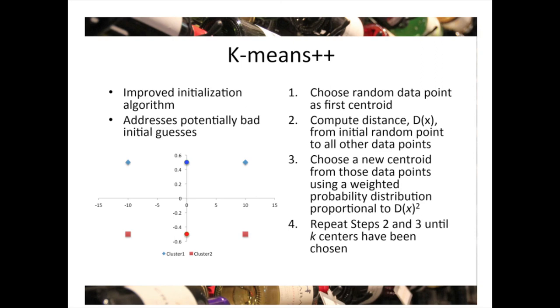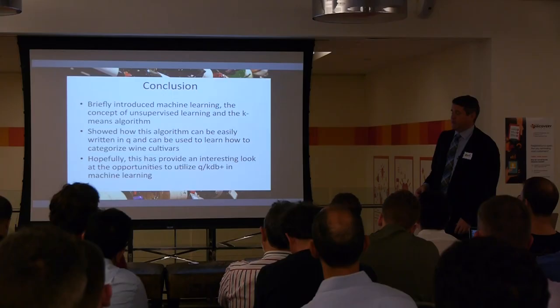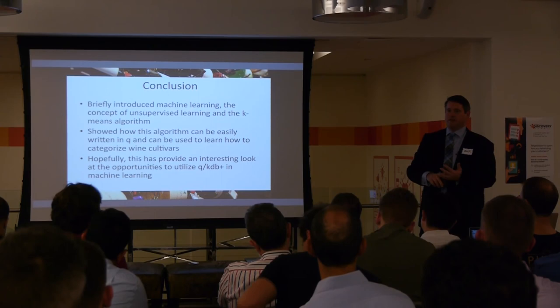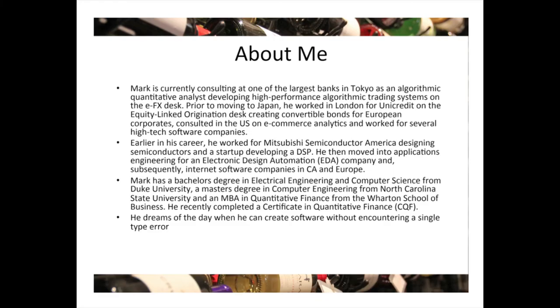In conclusion, I briefly introduced machine learning and unsupervised learning, K-means in particular. You can easily write it in Q in just a few lines. You can use it to categorize as a blind classifier. This algorithm is really powerful because of its simplicity and is widely used across a variety of different industries. I hope this was an interesting application of machine learning to Q and vice versa, encompassing wine along the way. Thank you for your time.